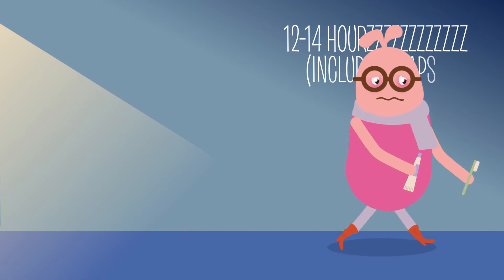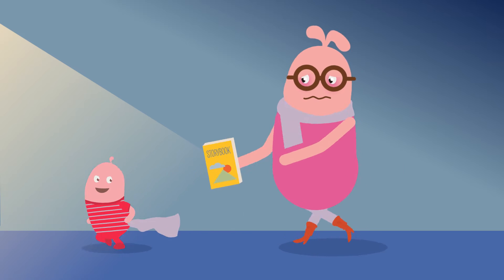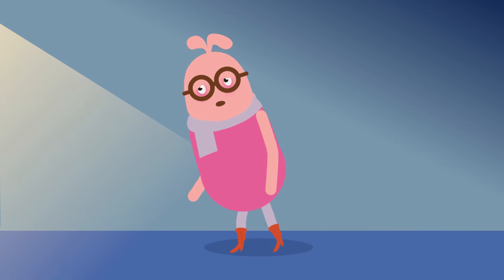Toddlers need 12 to 14 hours of sleep each day, including naps, but it can be hard to get them to settle down. Follow these tips to help stop the bedtime battles.